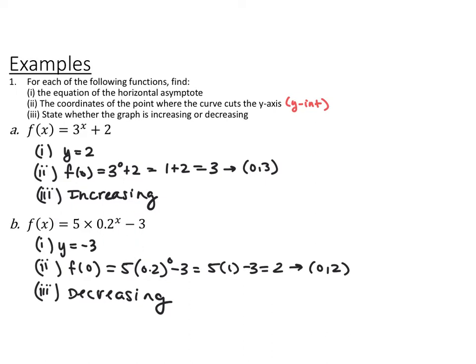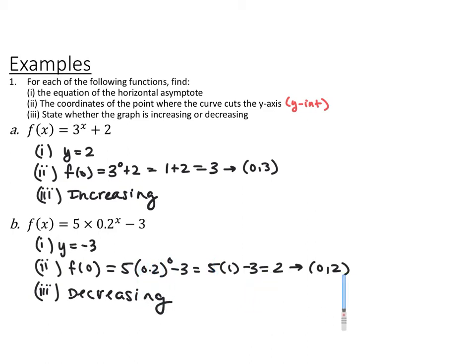For the second function, f of x equals 5 times 0.2 to the x minus 3, the horizontal asymptote is y equals negative 3. Plugging in 0 for x: 0.2 to the 0 is 1, so you get 5 times 1 minus 3, which is 2. The y-intercept is at (0, 2). Looking at the graph of this function, it is a decreasing function.